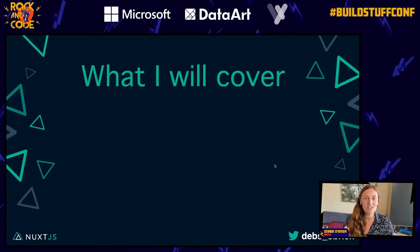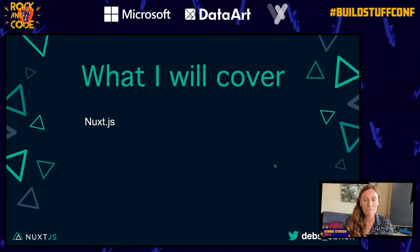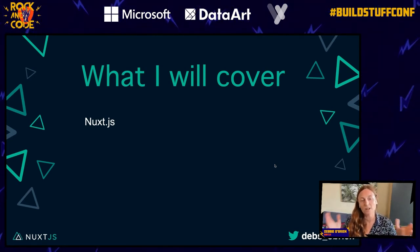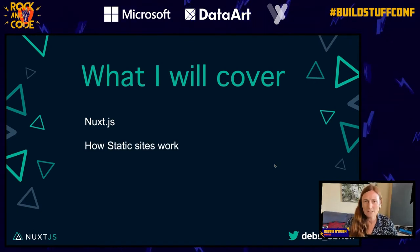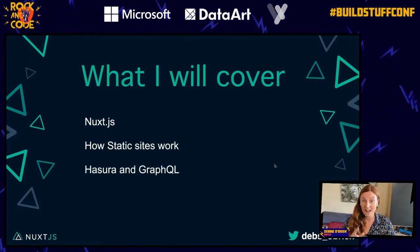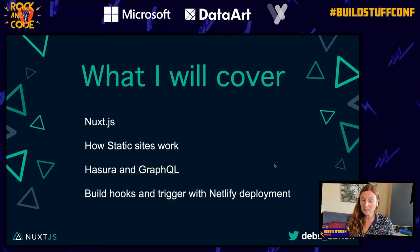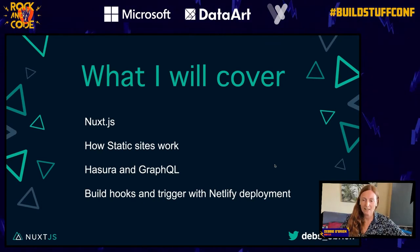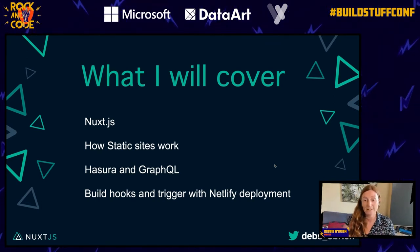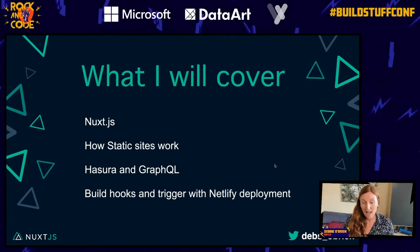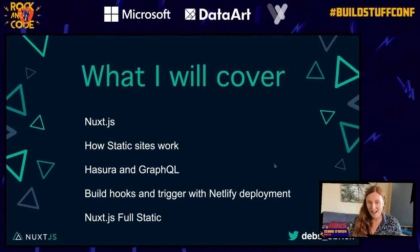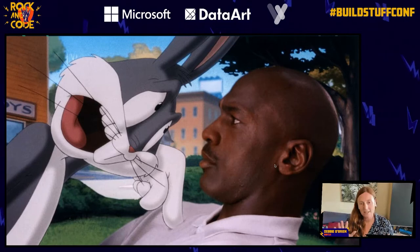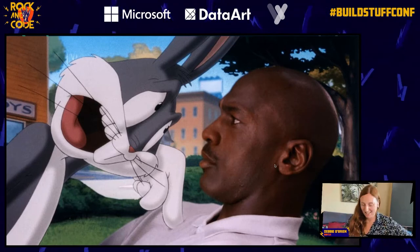Here's what I'm going to cover today: Nuxt.js — if you don't know what it is, I'll tell you. It's basically a meta framework on top of Vue. I'll tell you about how static sites work, cover Hasura and GraphQL, build hooks and triggers with Netlify deployment, and the Nuxt.js full static. If I have time, I might get into some serverless stuff. That's a lot of information, but don't worry — I'll take it slow and it will be fun.